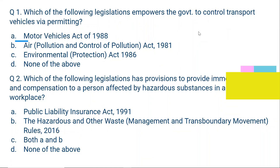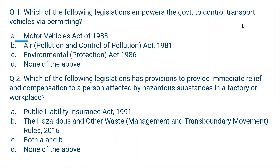Question number one: which of the following legislations empowers the government to control transport vehicles via permitting? A: Motor Vehicles Act of 1988. B: Air Prevention and Control of Pollution Act 1981. C: Environmental Protection Act 1986. D: None of the above. The correct answer is A, Motor Vehicles Act of 1988. It empowers the government of India to control the movement of transport vehicles via permitting.